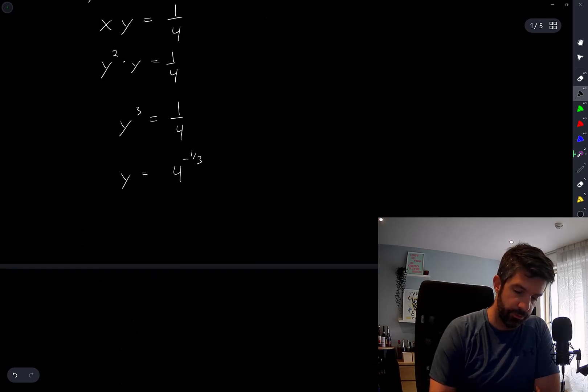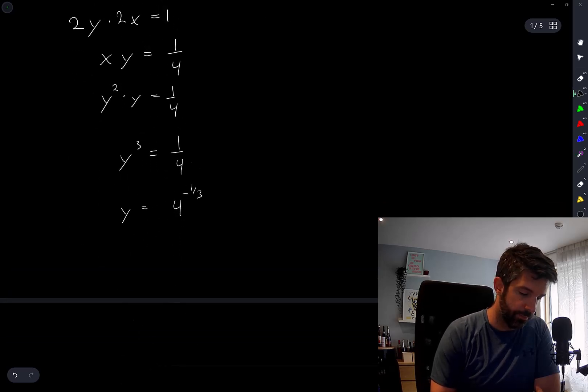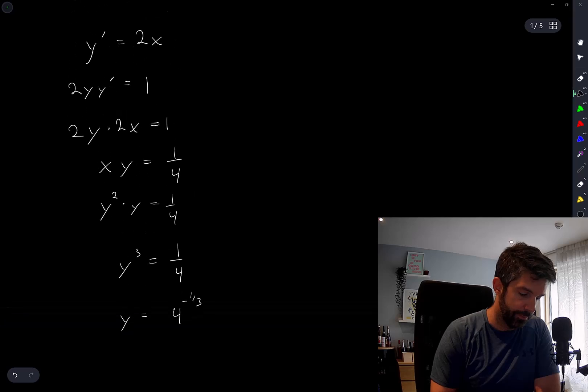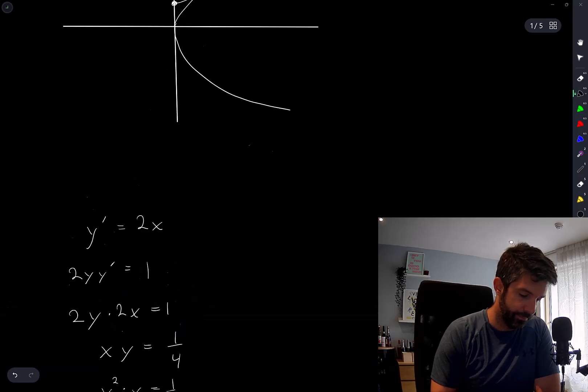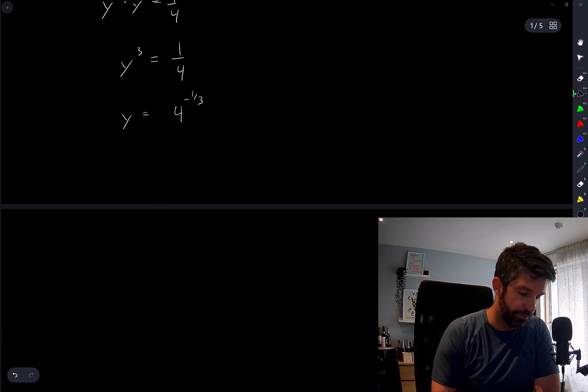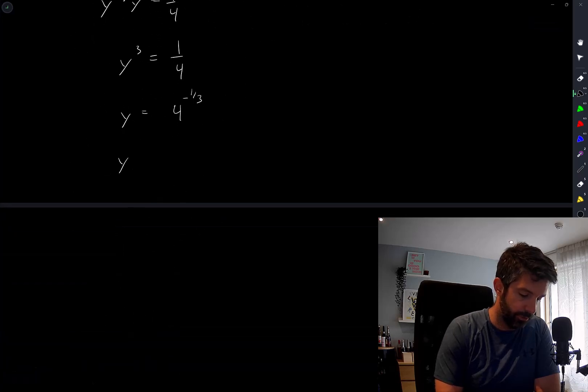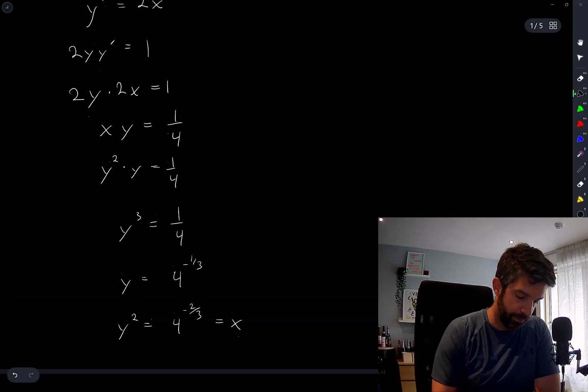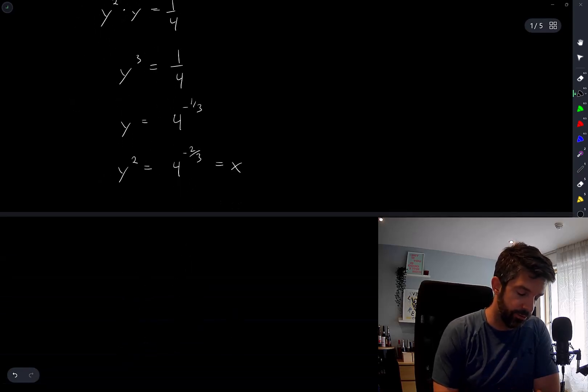I should then be able to solve for the x coordinate of this point. I have y squared is equal to x, right? So y squared is equal to 4 to the negative 2 over 3. And that's equal to x. So the x coordinate where these two things are tangent is that.